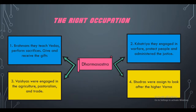The second caste is the Kshatriyas. These people were mostly engaged in warfare, meaning they served as the army, and they used to protect the people from outsiders. They also took care of the judicial systems. The third caste is the Vaishyas, who were mostly engaged in agriculture, trade, and pastoralism. The fourth caste is the Shudras, who had to look after and serve the above three caste systems — they served the higher varnas.